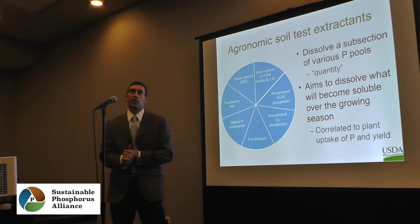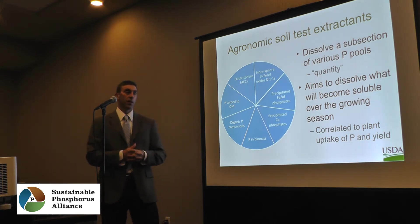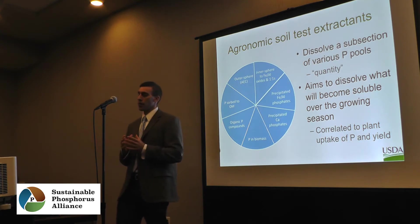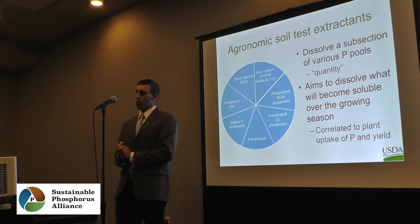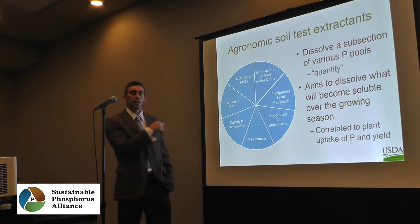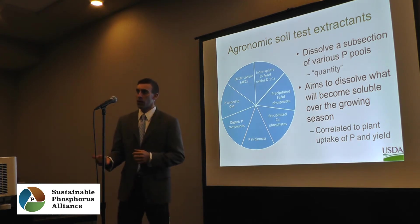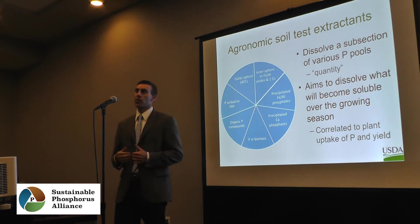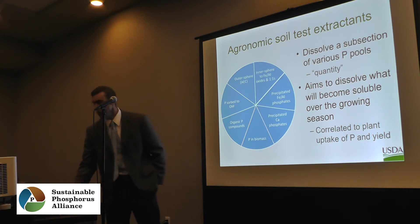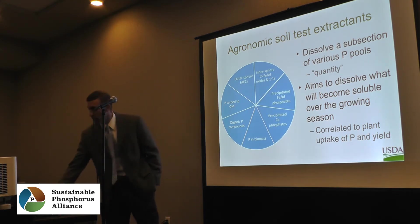Consider how agronomic soil test extracts work. They were designed very well by really good chemists, but they were designed to dissolve a subsection of different phosphorus pools — to grab a little piece of all these various inorganic and organic pools. The goal is to dissolve what will become soluble over the growing season. While the absolute value may not be what is available to the plant, it is correlated to what will be available. It's empirical, but it's what we've got to work with.